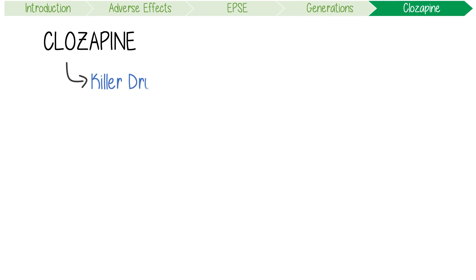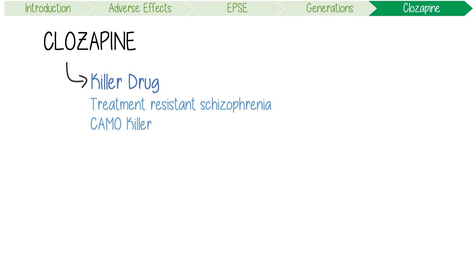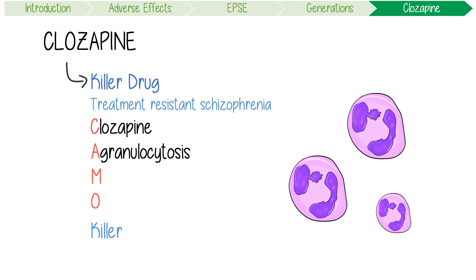Let's finish up by talking about Clozapine. This is a super killer drug for a couple of reasons. Firstly, it's the most effective therapy for treatment-resistant schizophrenia. However, Clozapine toxicity kills you in three ways, so you have to monitor for these complications. It can cause agranulocytosis, meaning no production of granulocytes, causing really low neutrophil levels; myocarditis along with other cardiac issues like myopathy; and finally obstruction of the bowel.